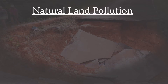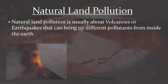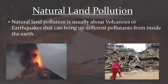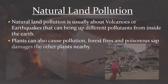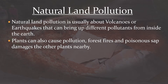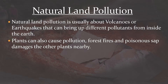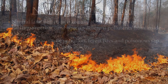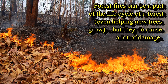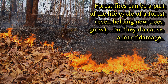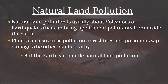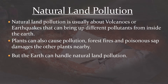If we think about natural land pollution, this can be caused by volcanoes or earthquakes. This damages the surface and can bring pollutants up from inside the earth. Plants can also cause pollution. For example, poisonous sap can damage other nearby organisms. Another indirect way that plants cause pollution is through forest fires, although we must remember that forest fires are often a natural part of the forest life cycle, but they do cause quite a lot of damage. But the earth can handle natural land pollution.